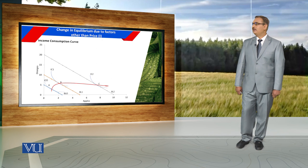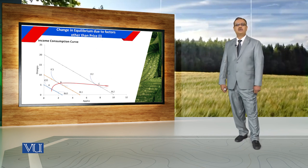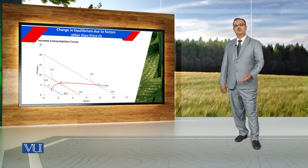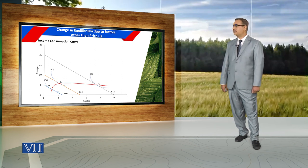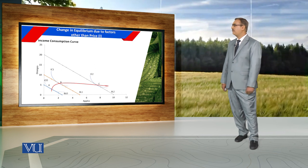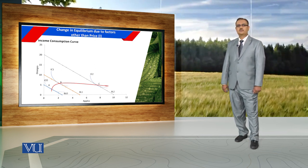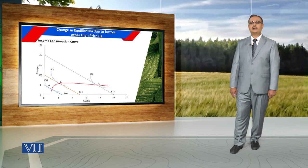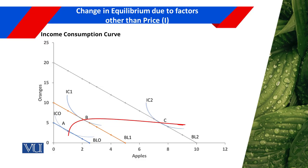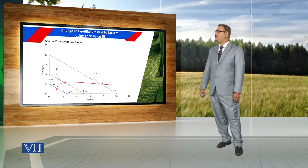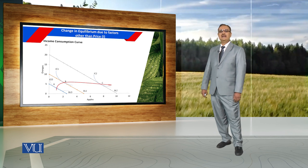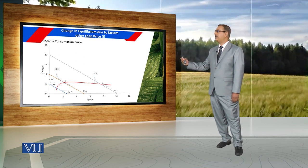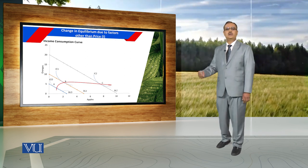Similarly, with reference to the original budget line BL1, if income of the household decreases, the budget line shifts from BL1 to BL0. Along BL0, the consumer maximizes satisfaction along IC0, choosing combination A of apples and oranges. So, keeping other things constant, if there is a change in income of the household, there is a change in the combinations of apples and oranges consumed.